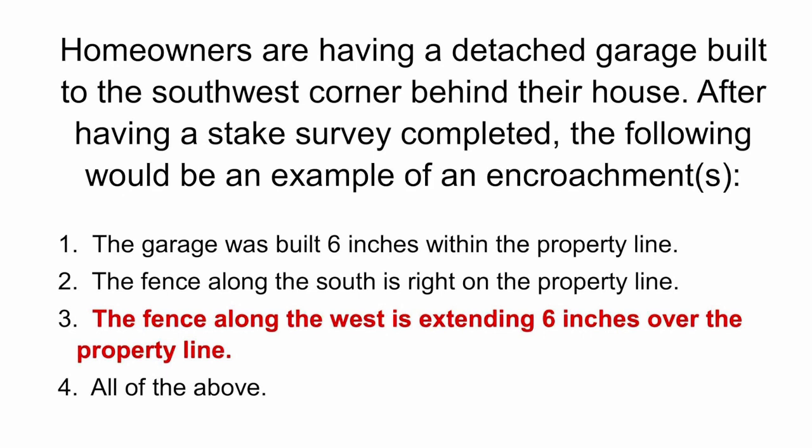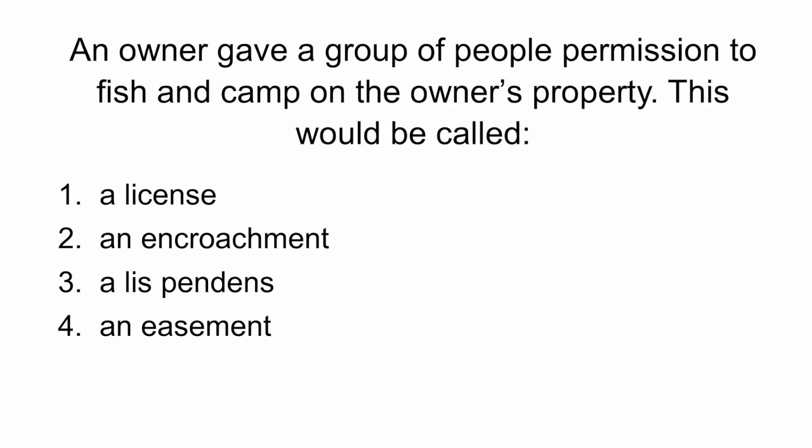Next question: an owner gave a group of people permission to fish and camp on the owner's property. This would be called: one, a license; two, an encroachment; three, a lis pendens; or four, an easement. The answer is number one — a license.